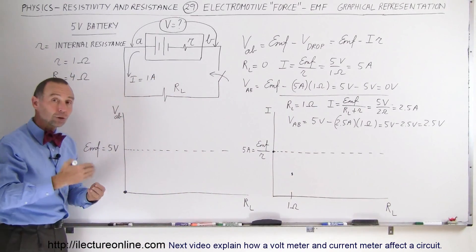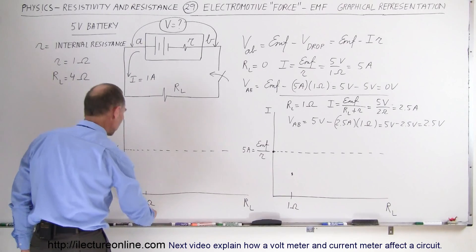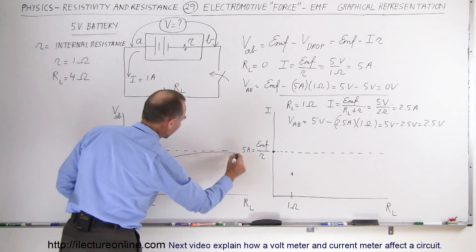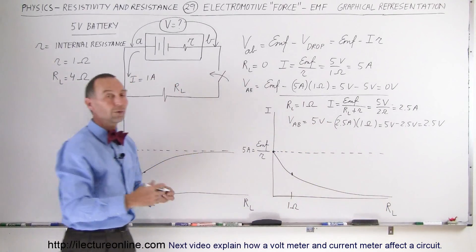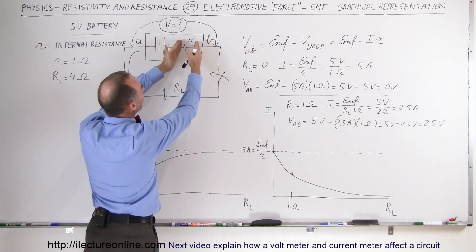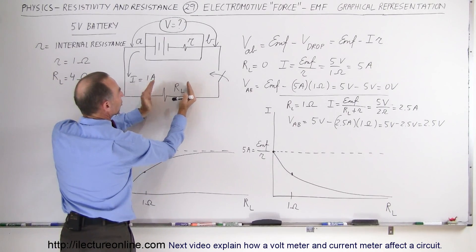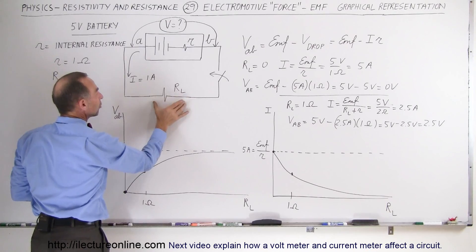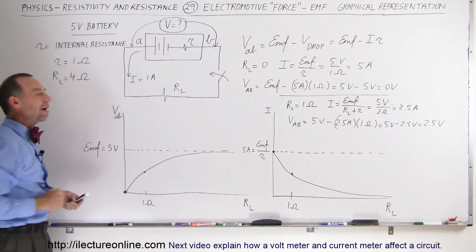As the load resistor gets bigger and bigger, the current keeps decreasing and the voltage from A to B keeps increasing. With R_L at 1 ohm, V_AB is 2.5 volts, and you can see the voltage increases logarithmically while the current decreases down to virtually zero when the load resistor becomes very large. When the load resistor is small, most voltage drops across the internal resistor so V_AB is nearly zero. As R_L grows, more voltage drops across the load resistor, less across the internal resistance, and V_AB approaches the EMF.